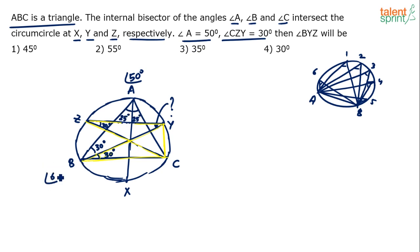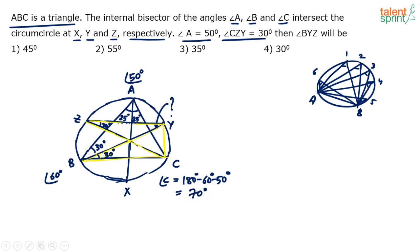We have found that angle B is 60 degrees. The total of angles in a triangle is 180. So if A is 50 and B is 60, then angle C equals 180 − 60 − 50 = 70 degrees. Since CZ is the angular bisector, the 70 degrees gets divided as 35 and 35 degrees on each side.